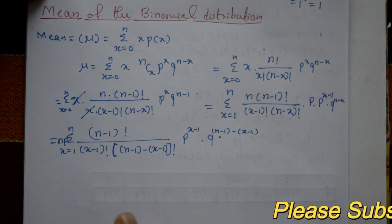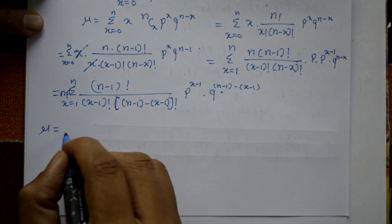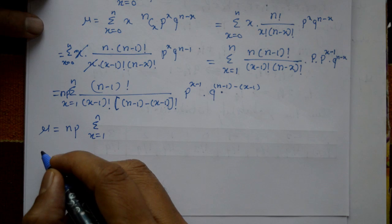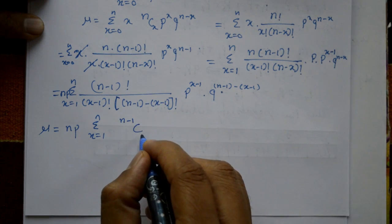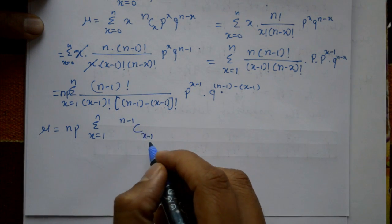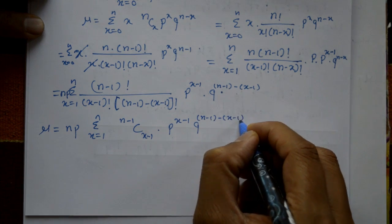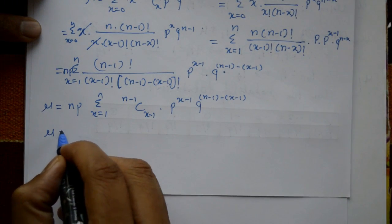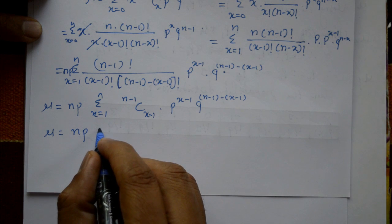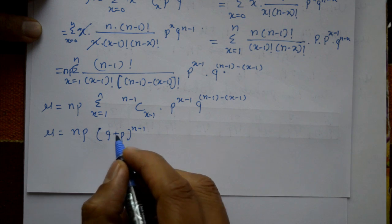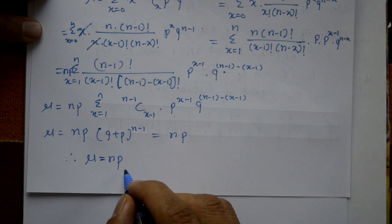Rearranging the terms, mu equals n p times summation x equals 1 to n of n minus 1 combination x minus 1, into p raised to x minus 1 into q raised to n minus 1 minus of x minus 1. Substituting r equals x minus 1, this whole sum is the binomial expansion of q plus p raised to n minus 1. Since q plus p equals 1, the sum equals 1. Therefore, mu equals n p, which is the mean of the binomial distribution.